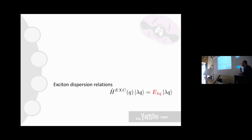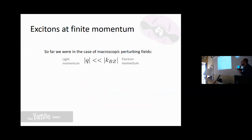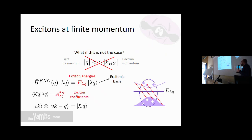The next topic is computing excitonic properties at finite momentum. So far we focused on optical absorption, which is done when the momentum of the incoming electromagnetic field is very small compared to the Brillouin zone size — essentially q = 0, with only vertical valence-to-conduction transitions. But you can also compute excitonic properties at finite momentum, where q acts as the center-of-mass momentum of the electron-hole pair.